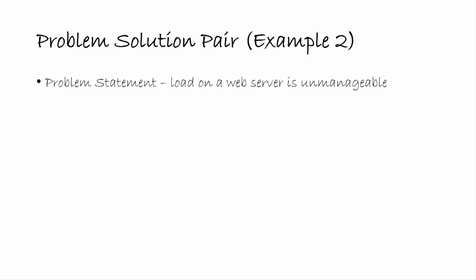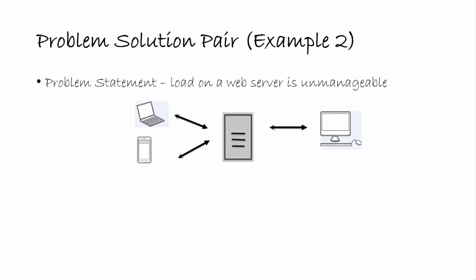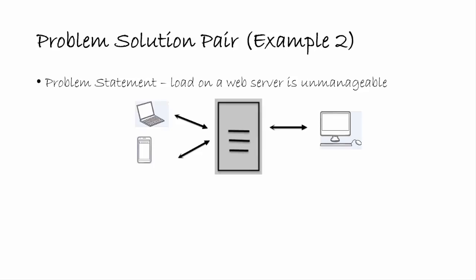Here is another example from the perspective of an IT professional. The load on a web server becomes unmanageable. You have a web server connected to various clients — mobile browsers, laptops, desktop computers, cameras, and other sensors. If your website becomes very popular, traffic grows and the web server cannot manage it. You can scale up by adding more computational power and memory, but there is a limit to how much you can scale up any infrastructure.